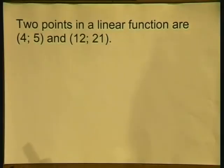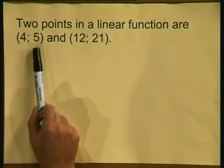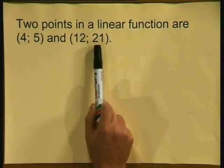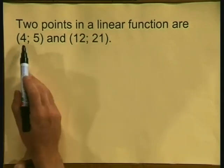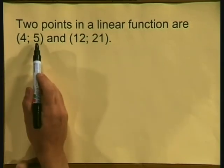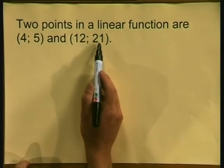Let's try an example. Two points in a linear function are (4, 5) and (12, 21). Now let's analyze this information. We can show this information as follows. Here we have an input of 4 with an output of 5 and an input of 12 with an output of 21.